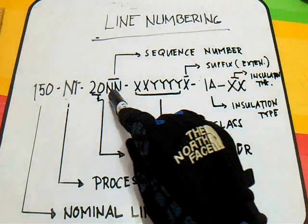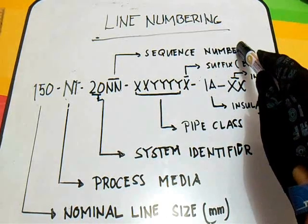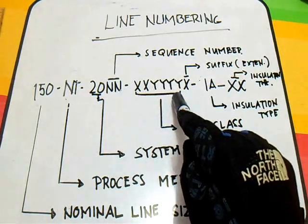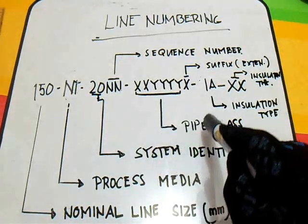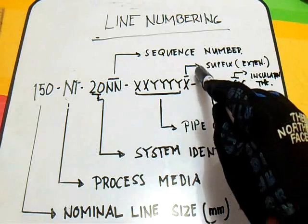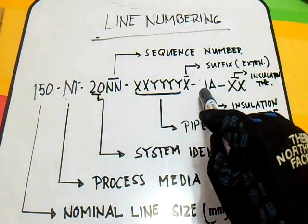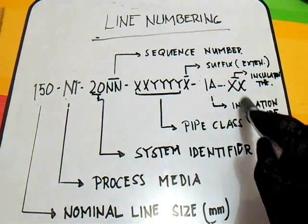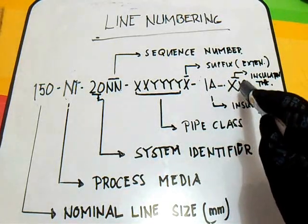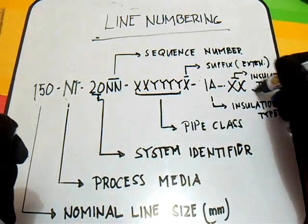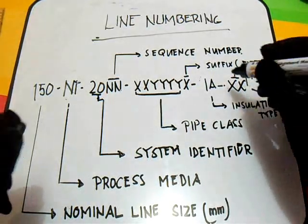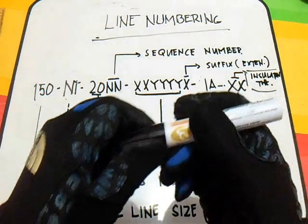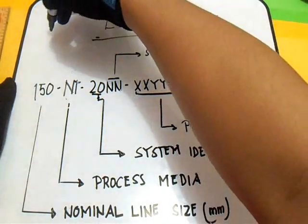And this N is a sequence number. We have XXX here, XXY — this is the pipe class. You can see this X is the pipe extension. Now what is IA? This IA is the isolation type, and this X is the insulation thickness. So IA is the insulation type.